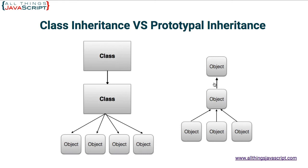If at any point it finds it, it returns it and stops looking. If it makes it all the way to the top without finding it, that's when we get an undefined result. Once it finds it, it simply borrows it and uses it. For example, if the toString method existed on this object, it would go ahead and execute the toString method just as if it existed on itself. That's a unique difference between the inheritance used in JavaScript and class inheritance. Objects in JavaScript don't need to have all properties and methods — they can borrow from another object.